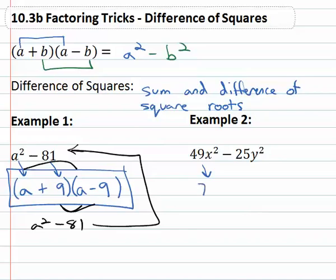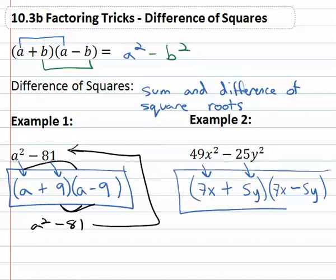The square root of 49x squared is 7x. The square root of 25y squared is 5y. It's going to factor to the sum and difference of the square roots, 7x and 5y again. 7x plus 5y, 7x minus 5y. We have factored the difference of squares.